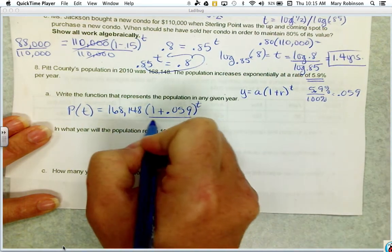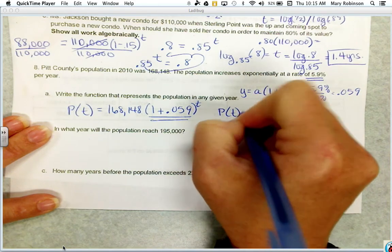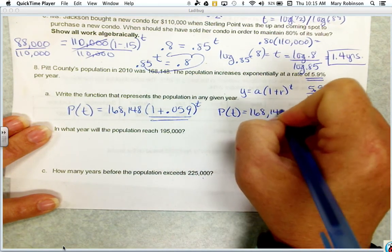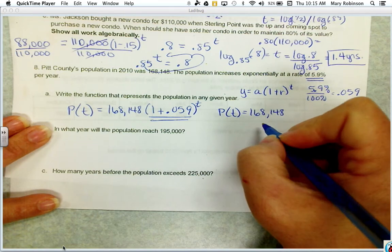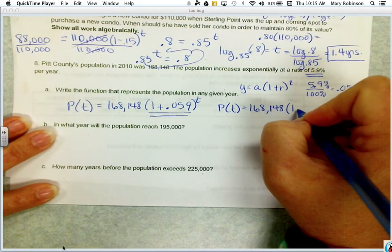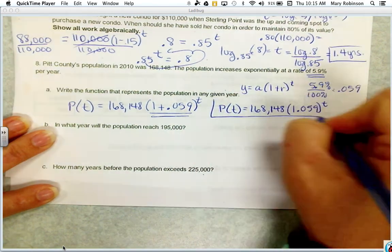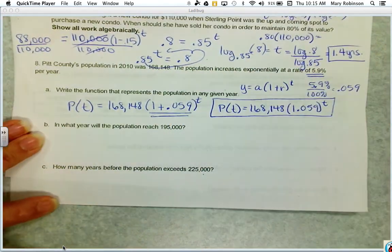But of course, I do want to have this combined. So please write it as p of t equals 168,148 times 1.059 to the t power. So that would be our population function.